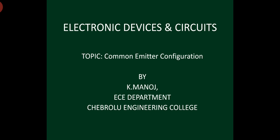In common emitter configuration, by seeing the title we can say emitter is common in this configuration. A transistor has three terminals: emitter, base, collector. In common emitter configuration, emitter is common for both input and output terminals, so the emitter is grounded. If emitter is grounded, then base becomes the input terminal and collector becomes the output terminal. Base and emitter form the input terminal, and collector and emitter form the output terminal.